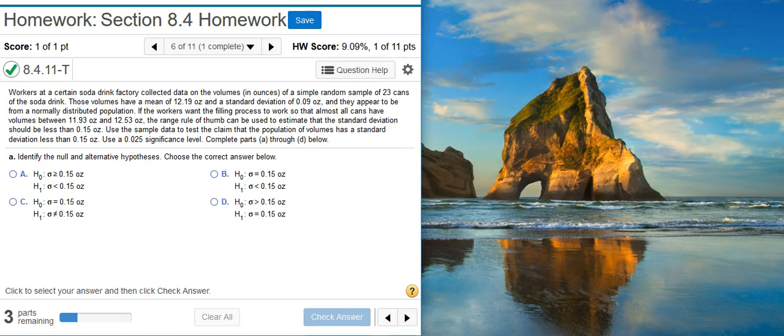Use the sample data to test the claim that the population of volumes has a standard deviation less than 0.15 ounces. Use a 2.5% significance level. Complete parts A through D below.